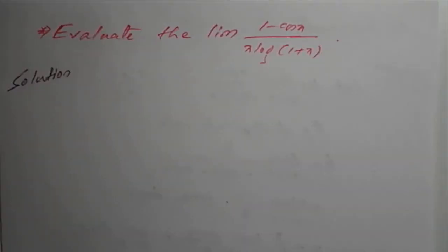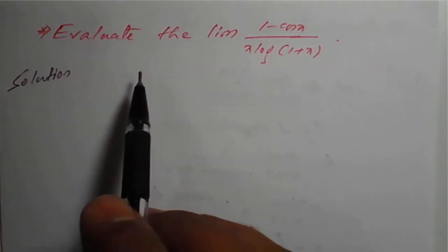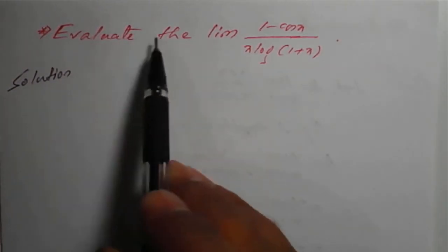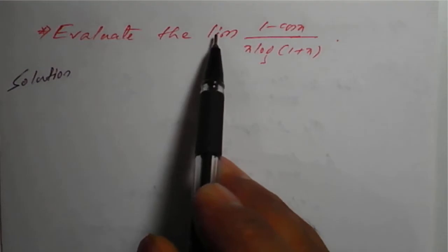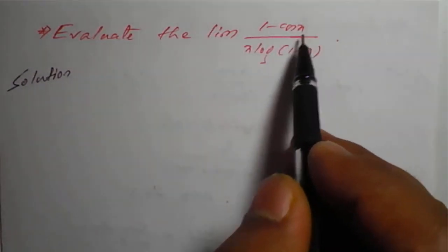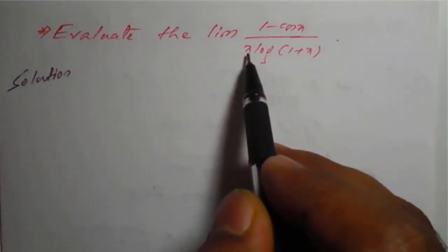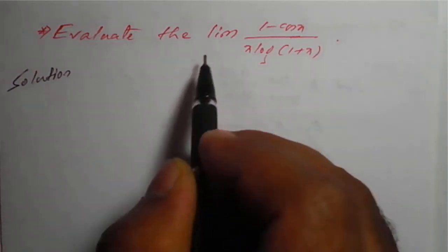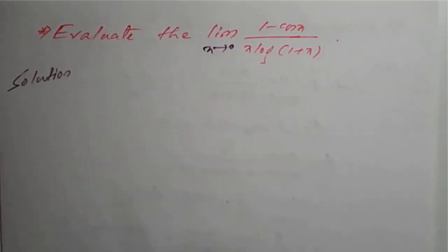Hello everyone. In this session, we will see a problem based on limits. The problem is: evaluate the limit of 1 minus cos x divided by x times log of 1 plus x, as x tends to 0.